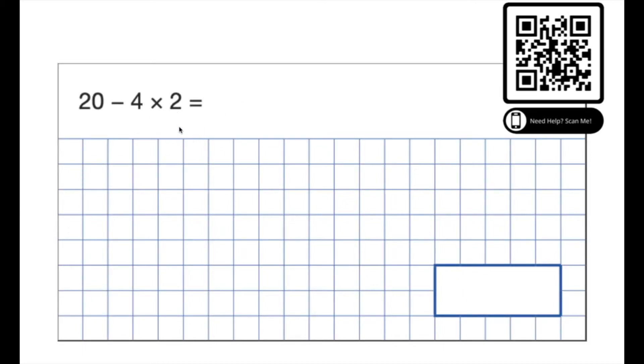Okay having a look at another example, we've got a multiplication and a subtraction, we're going to do that multiplication first. 4 times 2 is 8, then the subtraction, 20 minus 8 is 12.